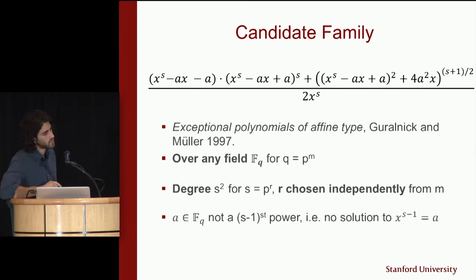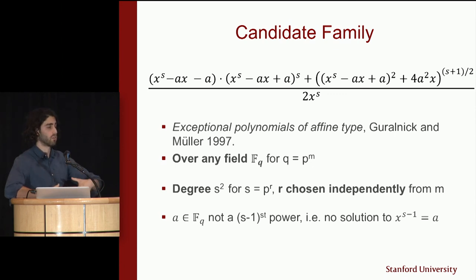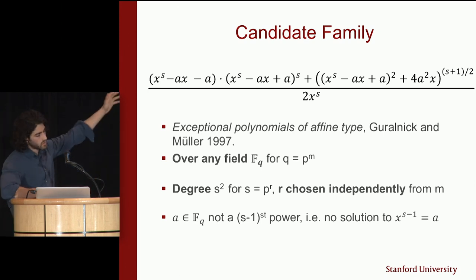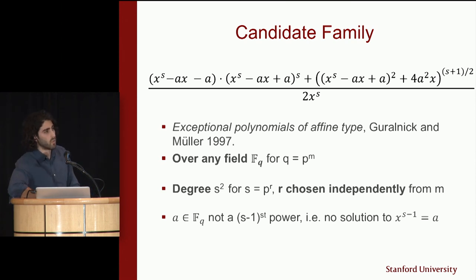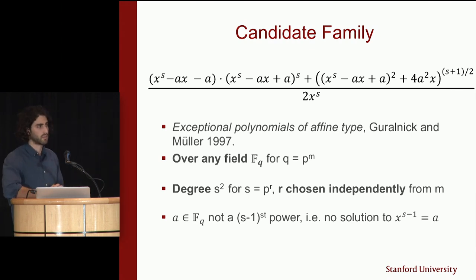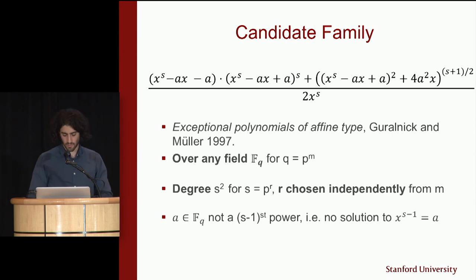We do have a candidate polynomial family that resists classical approaches to inverting polynomials that do not involve the GCD process. It's remarkable that a polynomial of this type exists — for any field this gives a permutation polynomial with arbitrarily large degree that can be chosen independently from the size of the field. With new assumptions in cryptography you need skepticism: the concrete assumption is that there's no way to speed up inversion of this polynomial other than the GCD process, which is not as well-studied as other cryptographic assumptions.